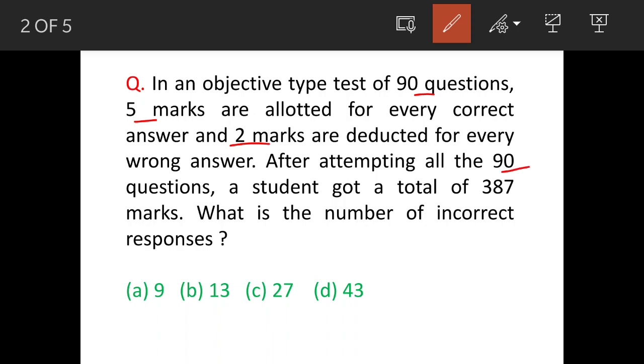After attempting all 90 questions, a student gets 387 marks. How many wrong answers did he write? These are the options. We will see the data once again: 90 questions, 5 marks minus 2 for every wrong answer, 387 is the total marks obtained.